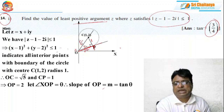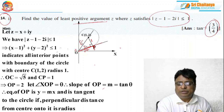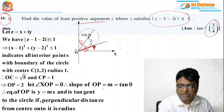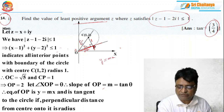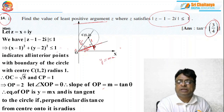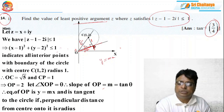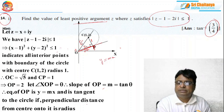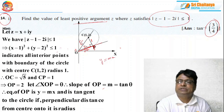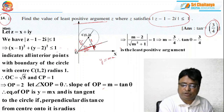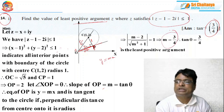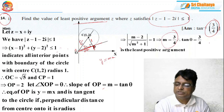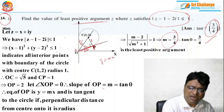Let angle XOP = theta. The tangent from the origin passes through O, so the equation of the tangent line is y = mx, i.e., y = x tan theta. For the line to be tangent to the circle, the perpendicular distance from the center (1, 2) to the line must equal the radius 1. After simplification, I get the slope M = 3/4, meaning tan theta = 3/4. This is a brilliant technique: among all complex numbers in this region, the point of contact of the tangent from the origin has the least positive argument.